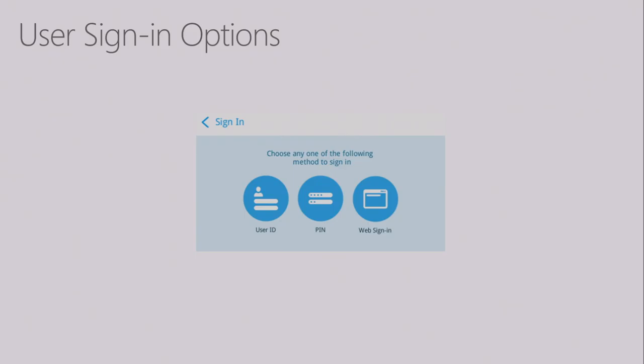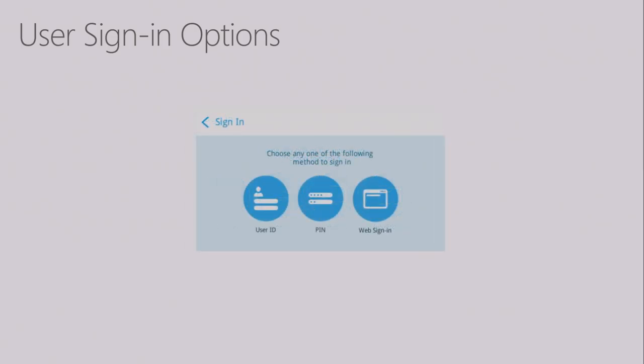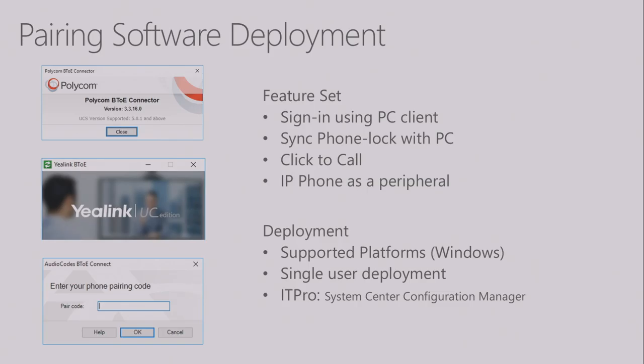If the phone is not connected to the PC, the via PC option automatically disappears to reduce options for users so they don't get confused. The sign-in options shown are only the ones relevant to the phone's current state and connection.